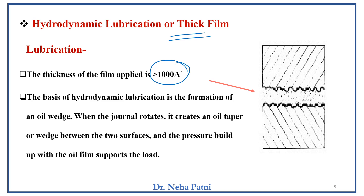The value of thickness for thick film lubrication is greater than 1000 Angstroms. This refers to the thickness of the lubricant film between two sliding surfaces. If two metallic surfaces are supposed to slide over each other, they should not come into contact with each other, and to avoid that contact we place a film in between — that film is called a lubricating film. If the thickness of that film is greater than 1000 Angstroms, it is called thick film lubrication.